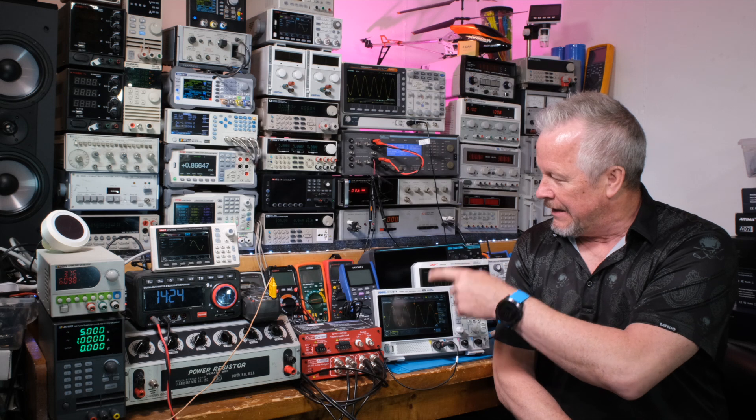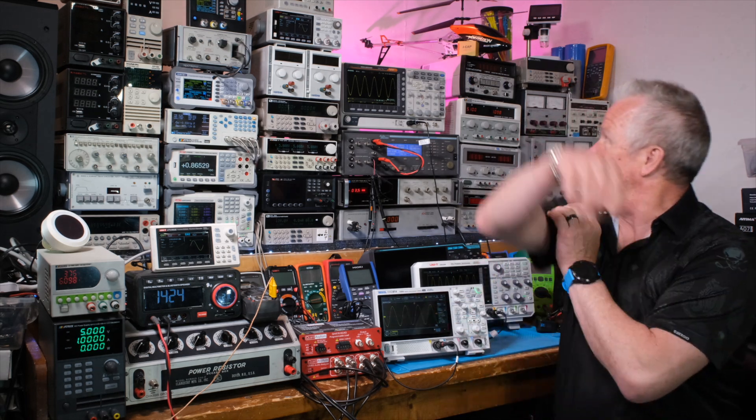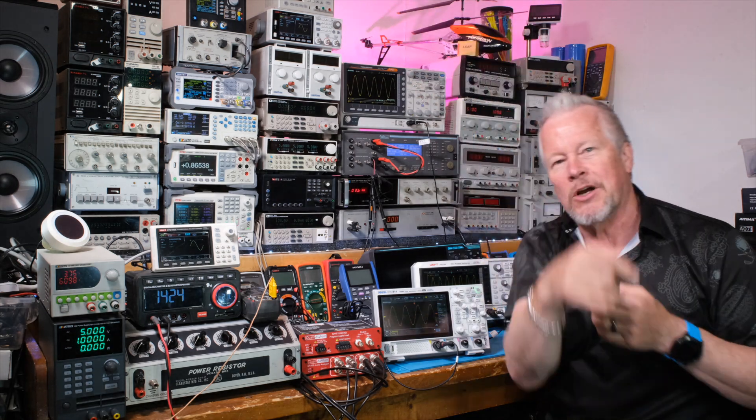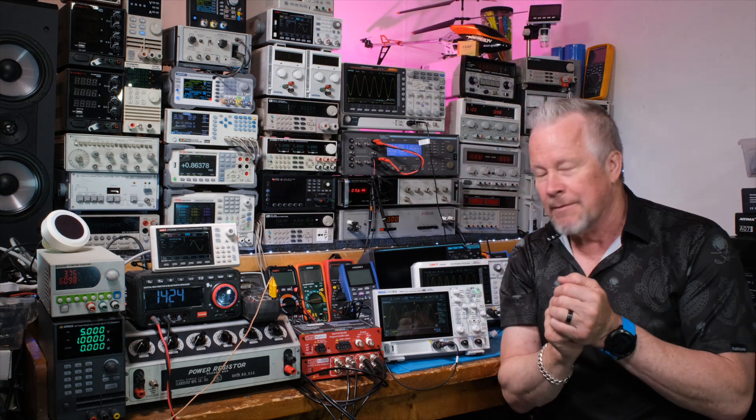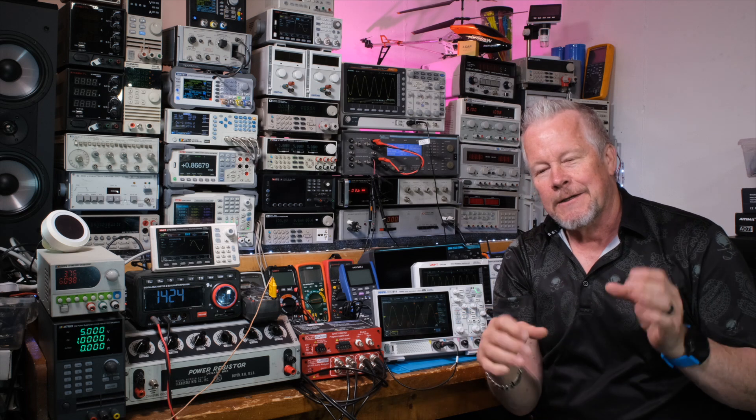DHO 814, and then we've got the UNI-T 100 meg and a GW Instek 200 meg. Those are 8 bit scopes, very nice scopes, but this is about why 12 bits is better than 8 bits when you have